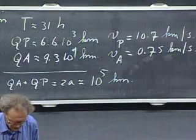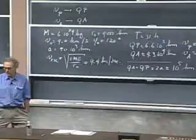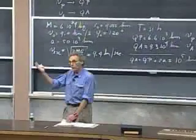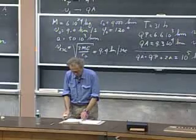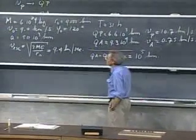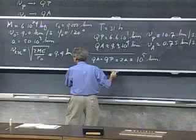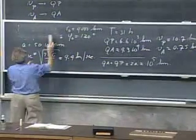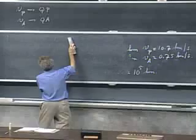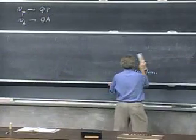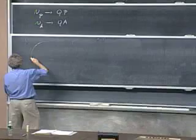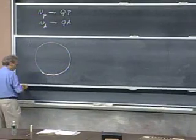We now know everything about this ellipse from the four initial conditions. We know the period, where apogee is, where perigee is — anything we want to know. I now want to get into a more difficult subject: changing orbits by burning a rocket when you are in orbit. I will do it only for simplified situations.